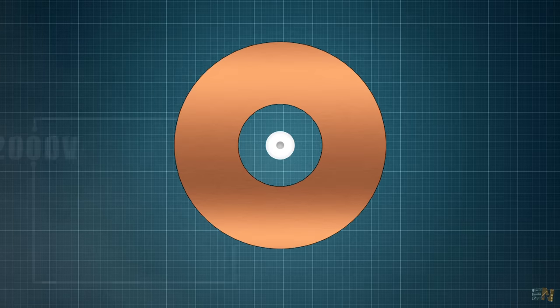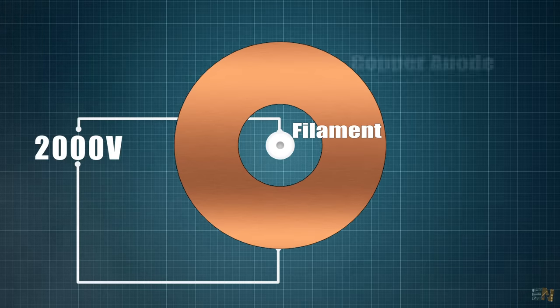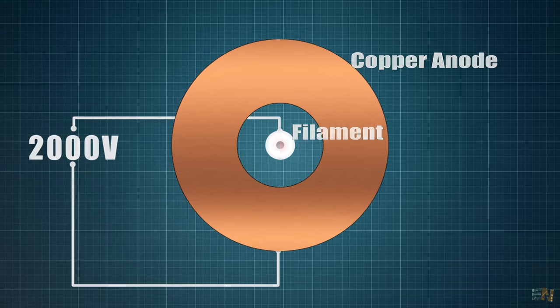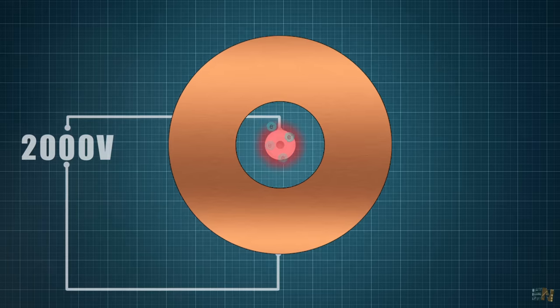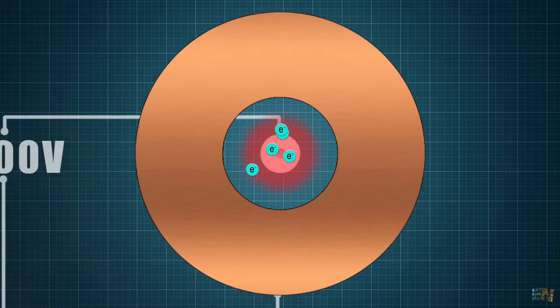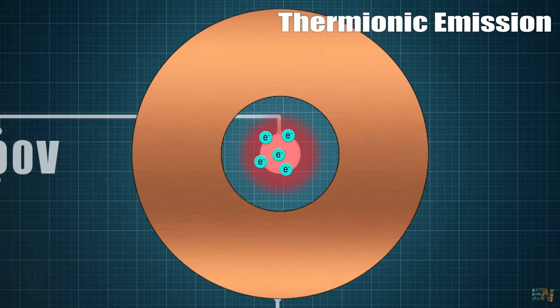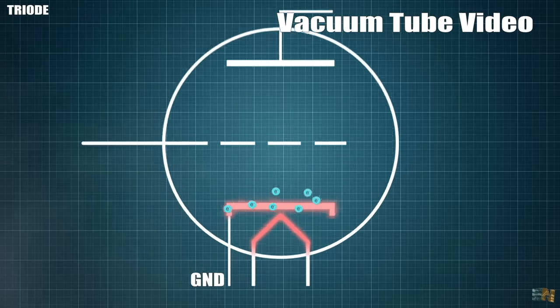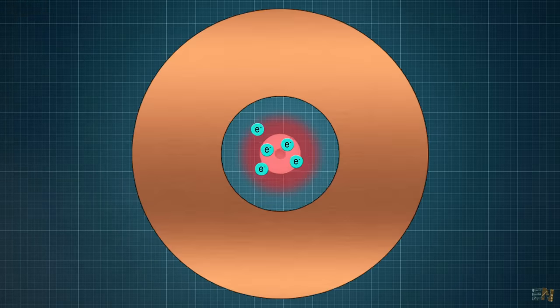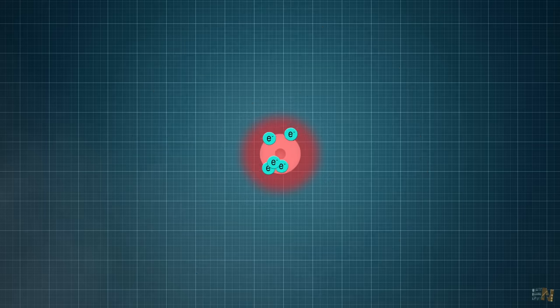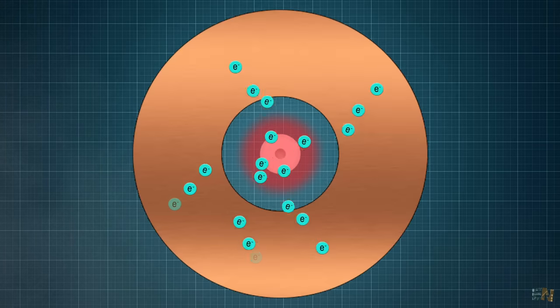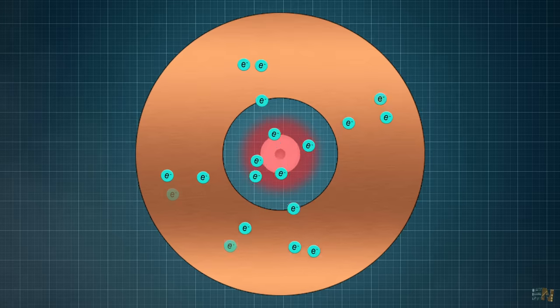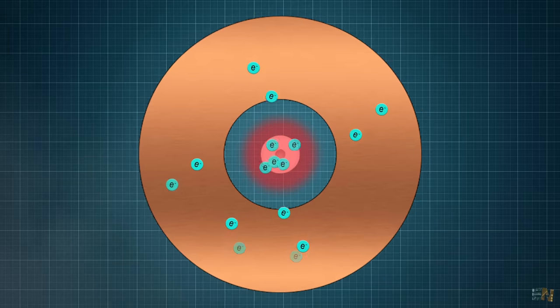We apply a very high voltage between the filament and the copper anode around it. The filament will get very hot and start shooting electrons out with a process that is called thermionic emission, just as we have seen in the vacuum tube video. But without the copper anode, these electrons will stay here. But since we have this copper anode all around, the electrons, due to the voltage difference, will accelerate towards the copper anode.